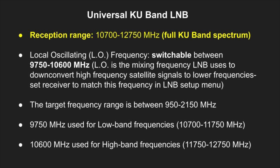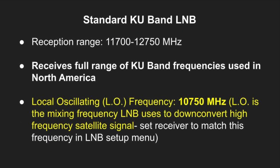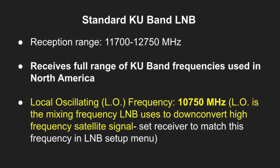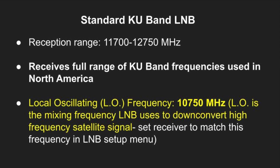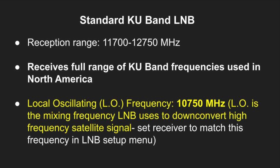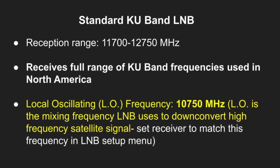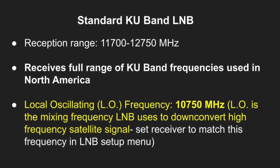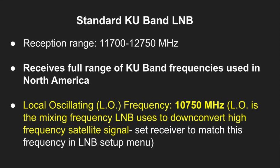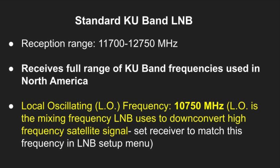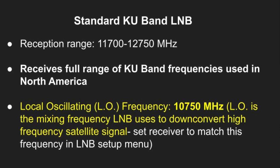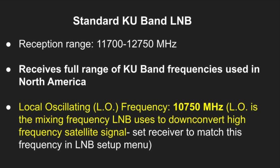For the low band, a local oscillating frequency of 9,750 MHz is used, and for the high band a local oscillating frequency of 10,600 MHz is used. This is where the universal LNB really differs from a standard KU-band LNB. A standard KU-band LNB can use a single local oscillating frequency of 10,750 MHz to down-convert signals because it only has to manage half of the KU-band spectrum, so all calculations fall within the range of 950 to 2,150 MHz — the correct signal range for traveling through coaxial cable to the receiver.